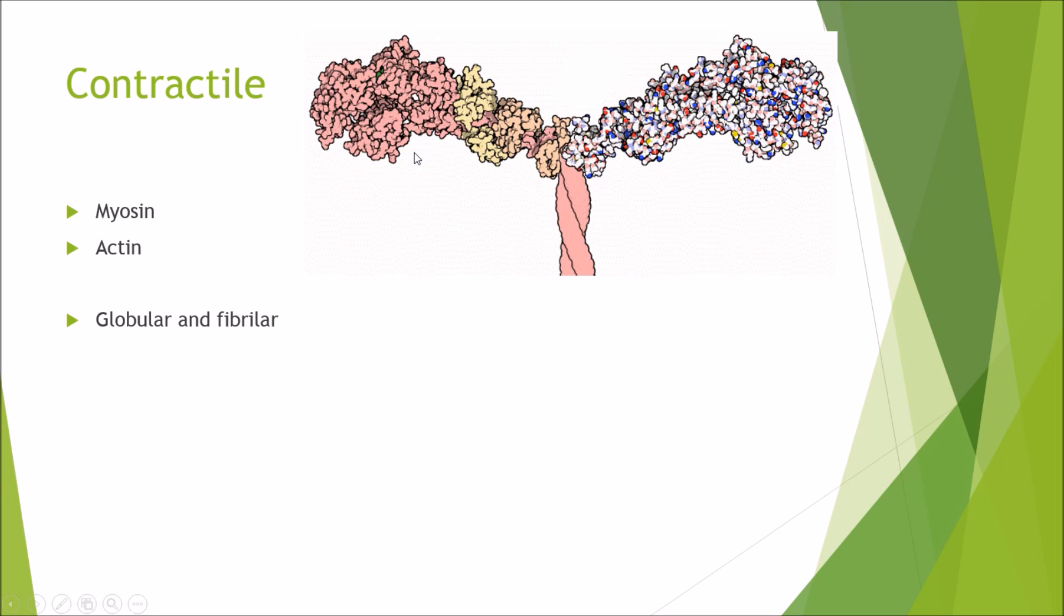For contractile proteins here you've got the myosin heads. Myosin and actin are the two main contractile proteins as we know from the sliding filament theory. They are globular at the ends but as you go down the middle they become fibular.